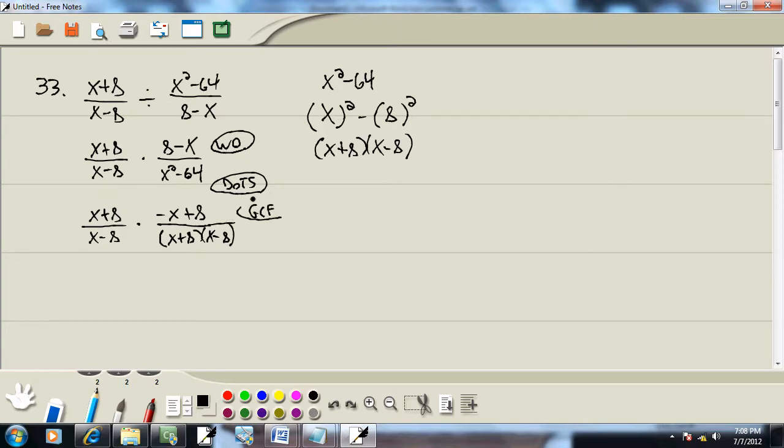Now the top part is GCF. They don't have anything in common. Our first term is negative, and whenever your first term is negative you always want to factor out a negative. So I'll factor out a negative 1. And that gives us x minus 8. You factor out a negative 1, it basically changes the sign of everything. The negative x becomes positive, the 8 becomes negative. Okay, so everything's factored.